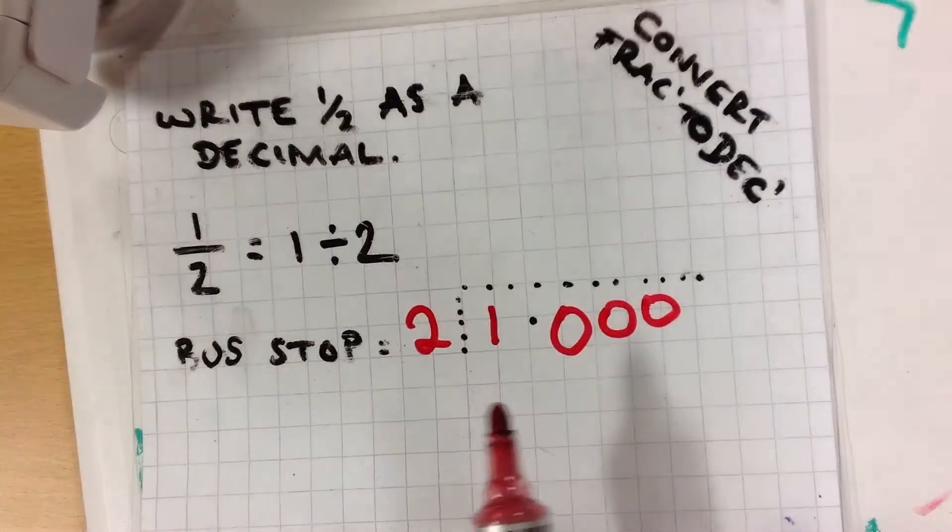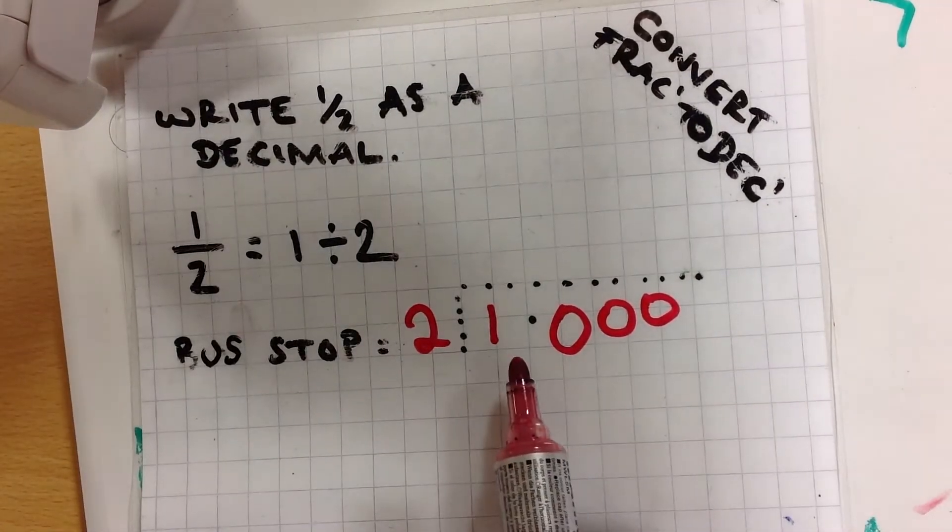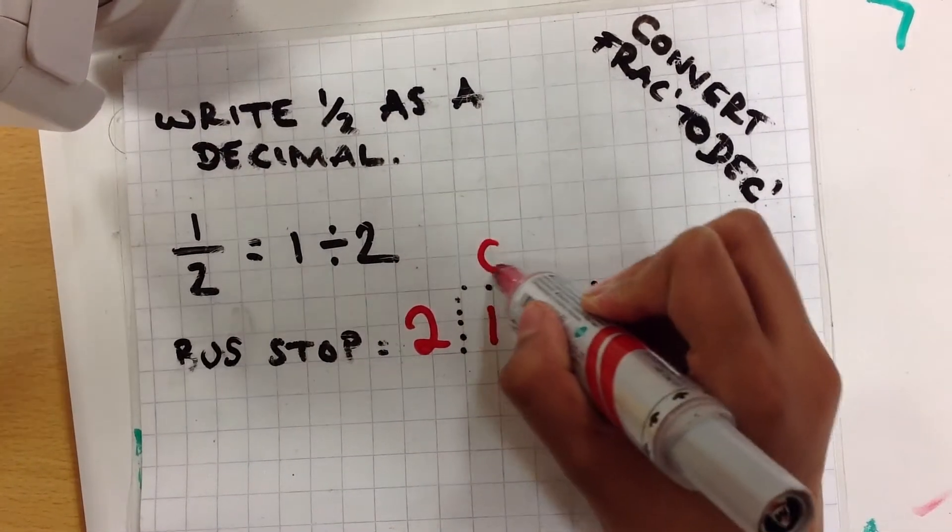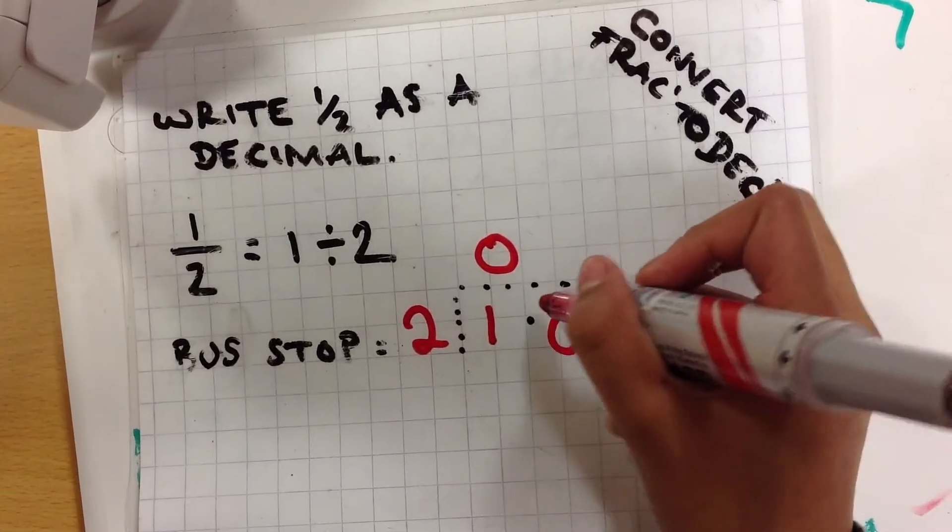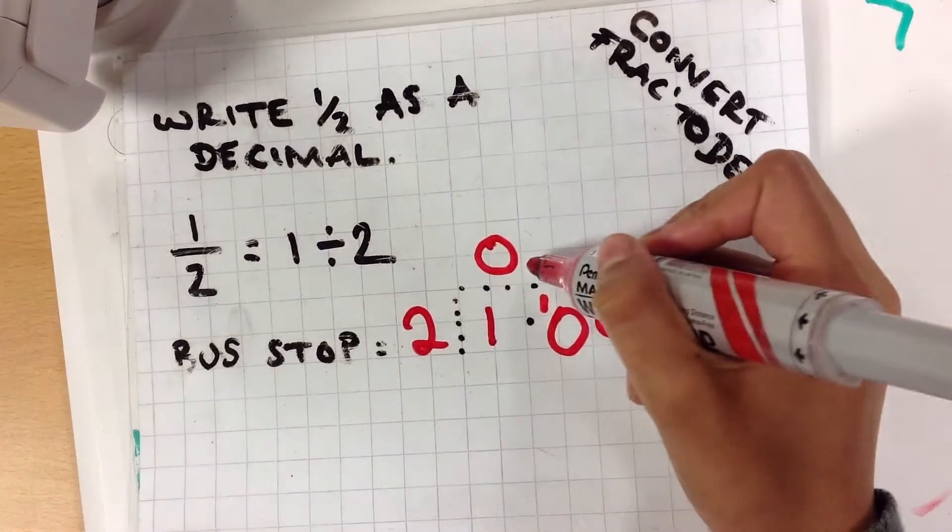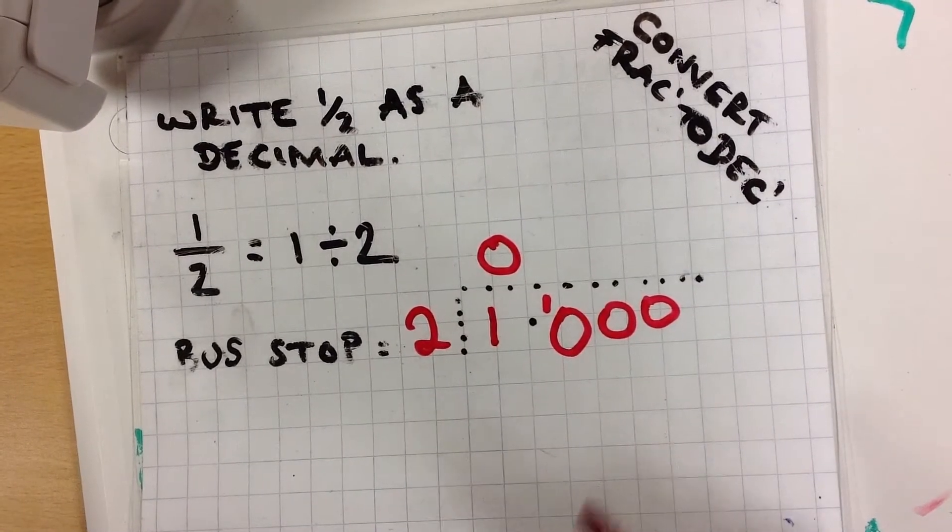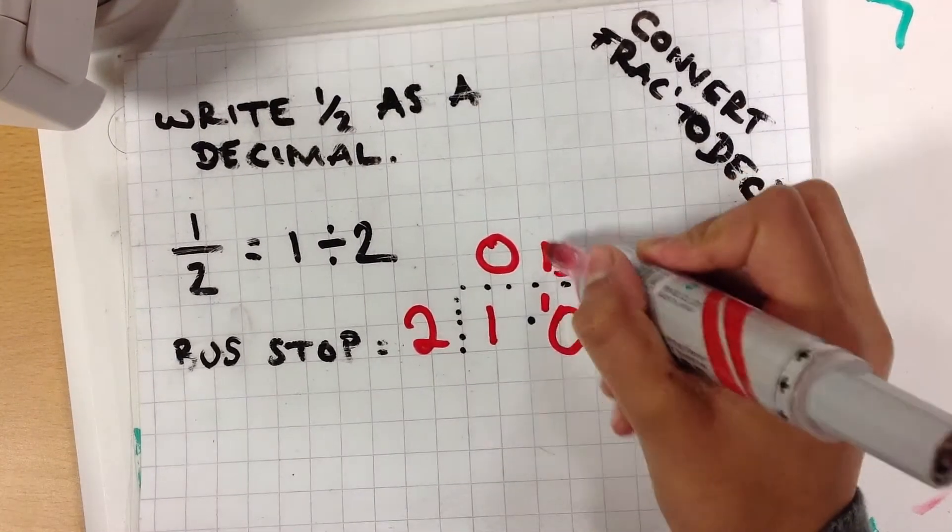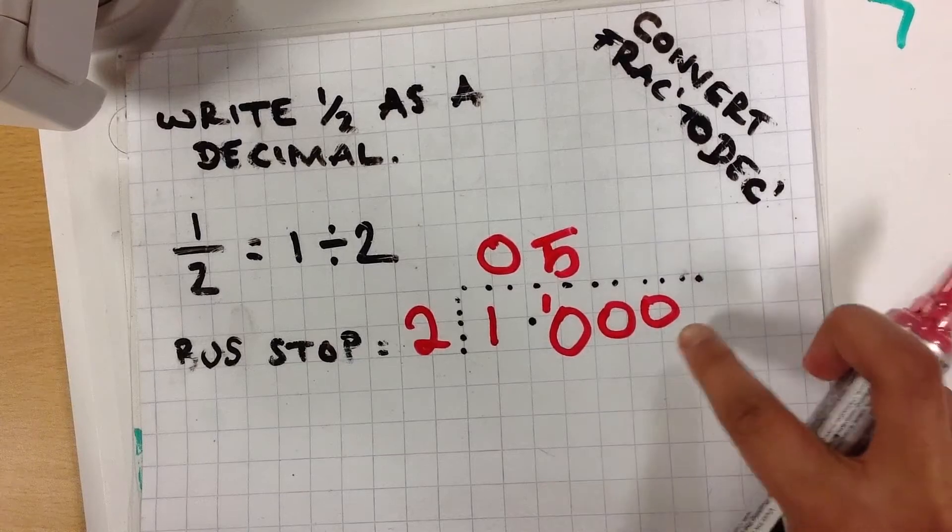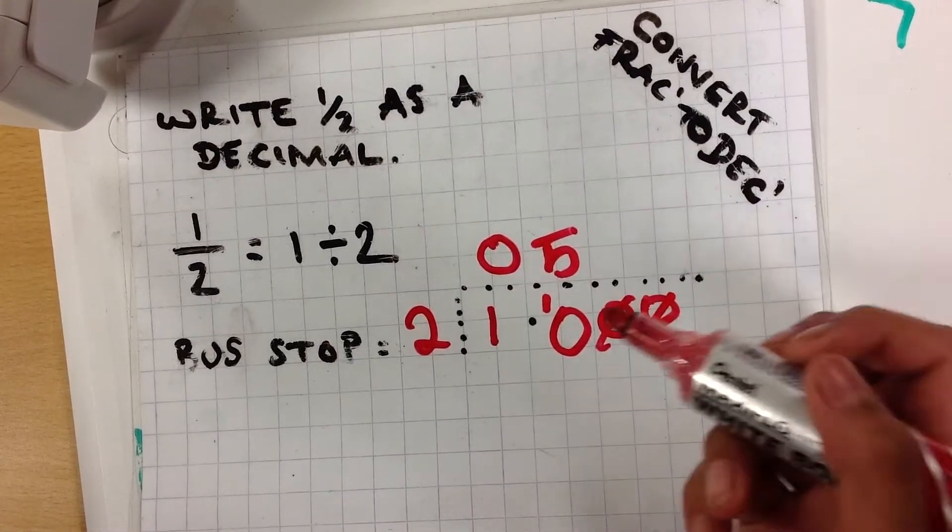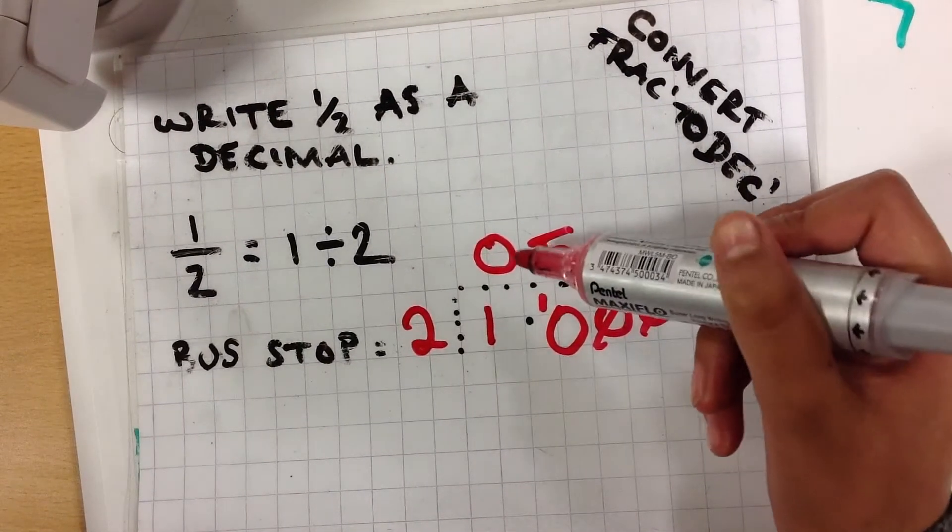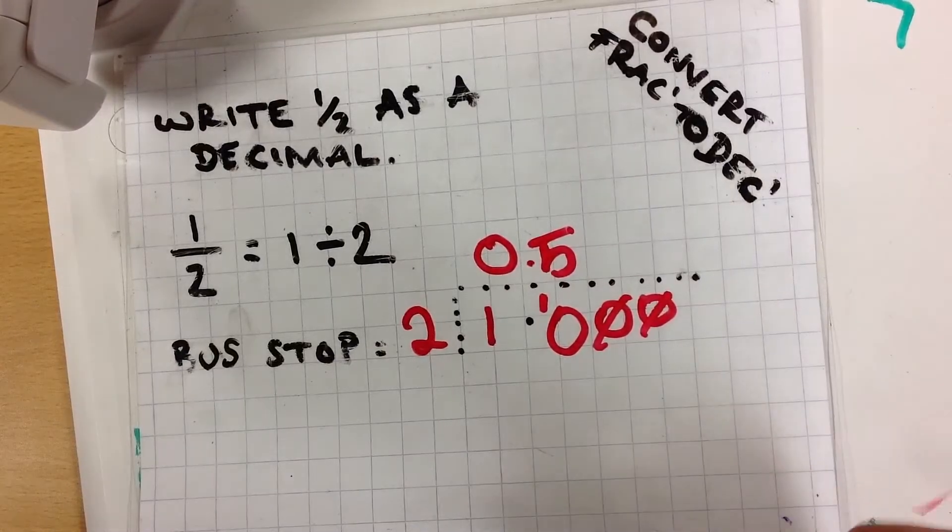First, we have to see how many 2's go into 1. The answer is 0. You carry the 1 over. How many 2's go into 10? 5. We don't need these zeros. Remember to bring the point up. So the answer is 0.5.